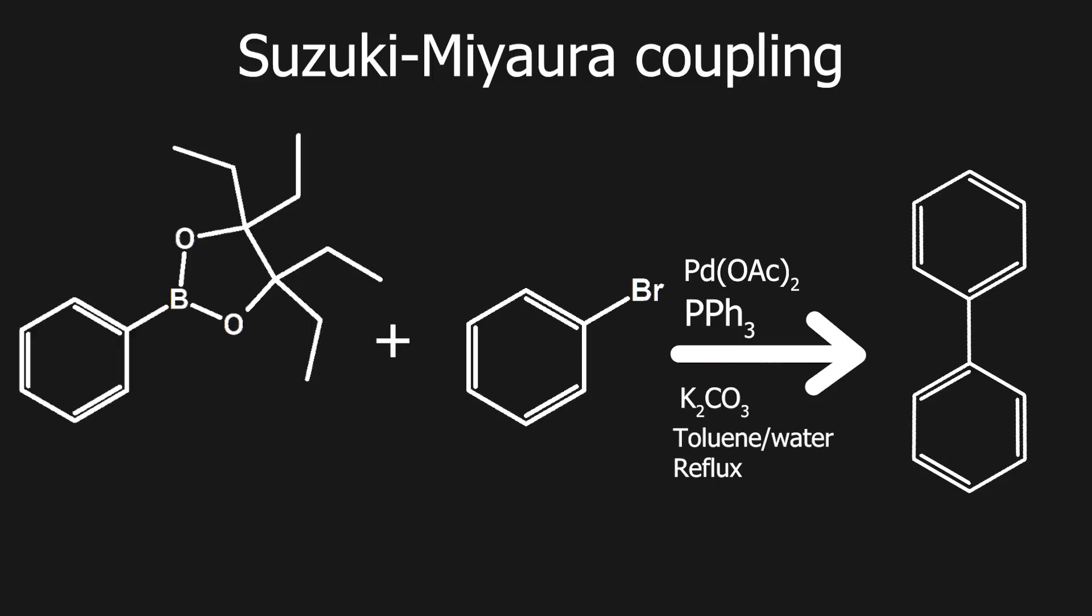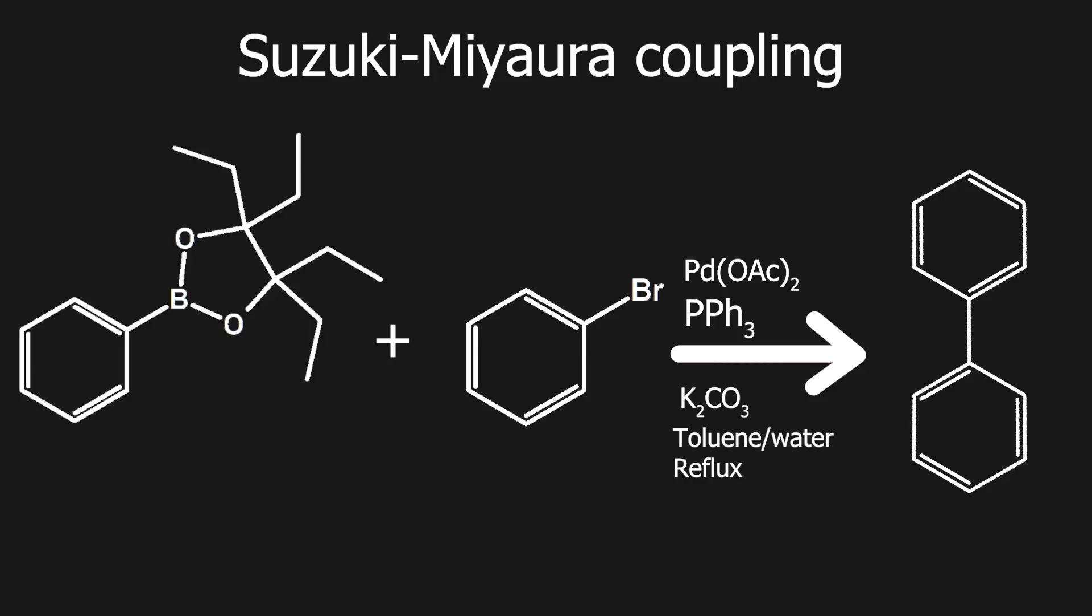When the phenyl B-epin is further purified, we can do a Suzuki-Miyaura coupling reaction with an aryl bromide like bromobenzene to test it out. For that reaction, I will use a general unoptimized procedure. So it will likely not be the best result. But still, it is very likely to at least give some product.